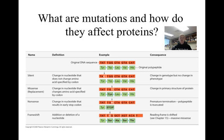In a silent mutation, one nucleotide changes; however, the codon that results from this mutation codes for the same amino acid as the codon did before the mutation. As a result, there will be a change in genotype but no change in phenotype, as the mutation doesn't change the protein at all. Therefore, a silent mutation is harmless.